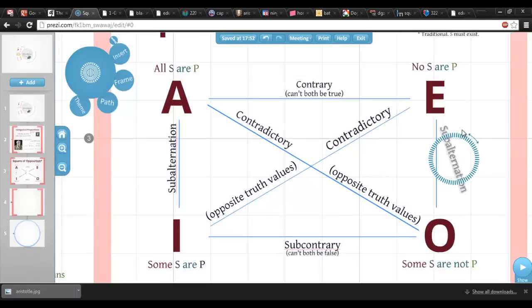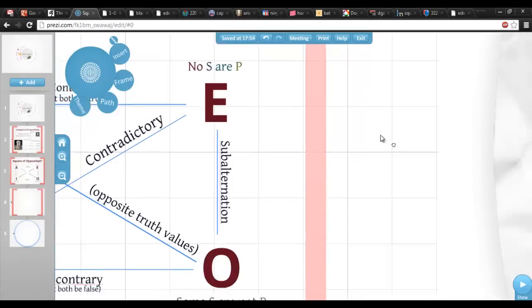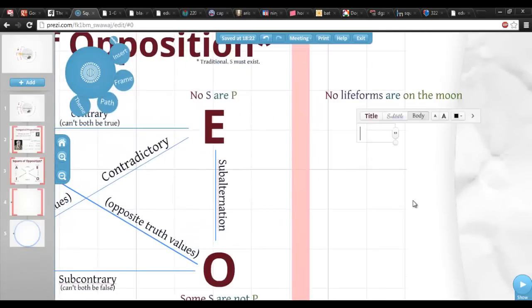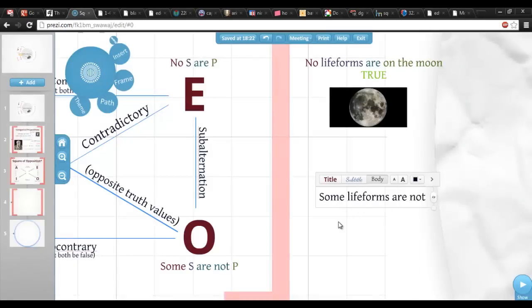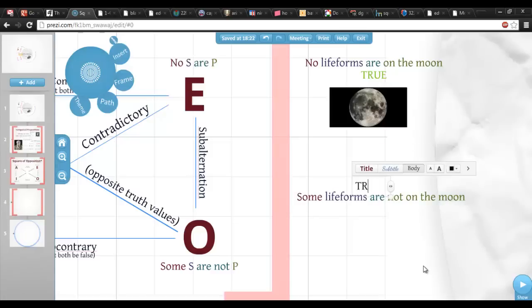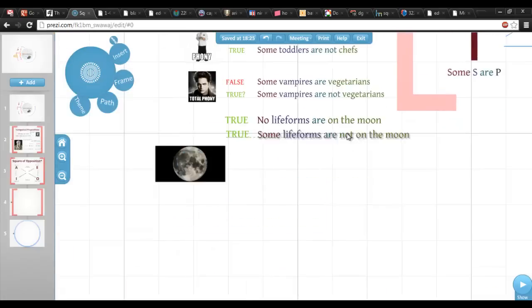The final relation in the square is along the right and left edges. Both edges share the same subalternation relation, and it works like this. If the universal is true, the particular is necessarily true. You can think of it like the truth of the universal trickling down to each of the particulars. This inference, for example, would make modern logicians uncomfortable, but it works perfectly well under the assumption that lifeforms exist.